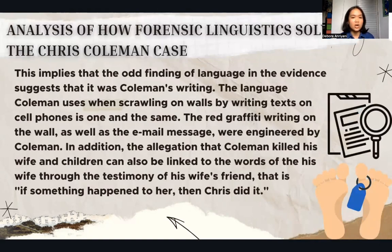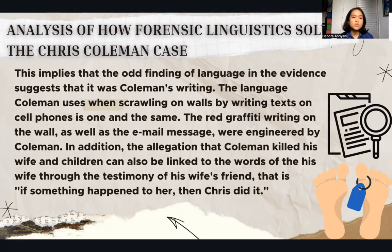This implies that the odd linguistic features found in the evidence suggest it was Coleman's writing. The language Coleman uses when writing text on cell phones is one and the same as the writing on the walls. The red graffiti writing on the wall, as well as the email messages, were engineered by Coleman. In addition, the allegation that Coleman killed his wife and children can also be linked to the words of his wife through the testimony of her friend — that is, 'if something happened to her, then Chris did it.'